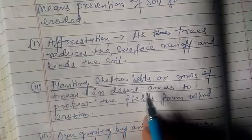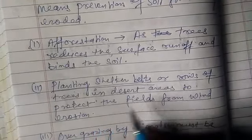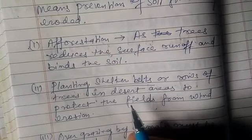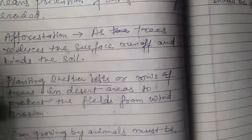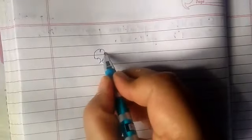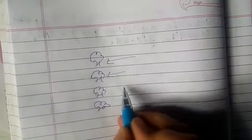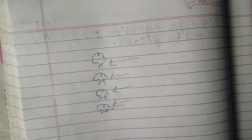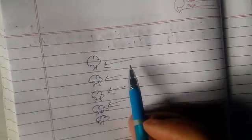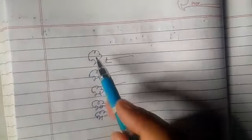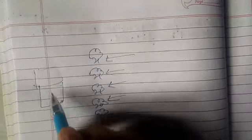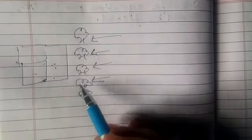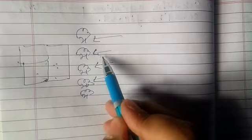The next method is planting shelter belts — rows of trees in desert areas to protect the field from wind erosion. When rows of trees are planted in this way, it restricts the speed of wind. These rows of trees are called shelter belts, and they are planted in desert areas to protect the field from soil erosion by reducing the speed of wind.